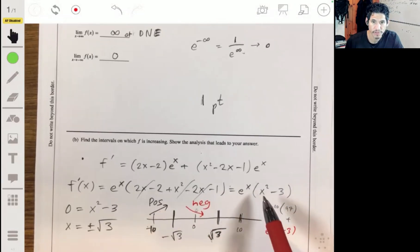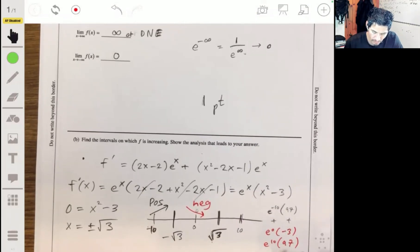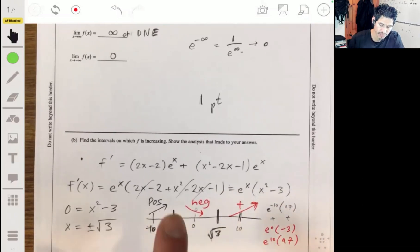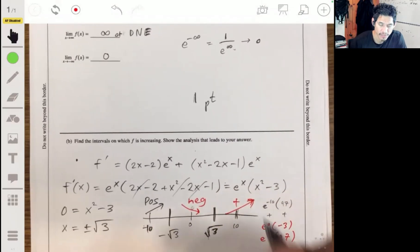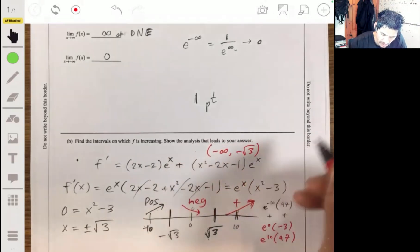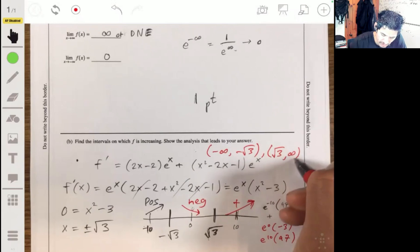And now let's plug in 10. You plug in 10, you get e to the 10 times 100 minus 3, 97, positive times a positive, going up in here. So it's increasing on these two intervals, negative infinity to negative square root of 3, and positive infinity.